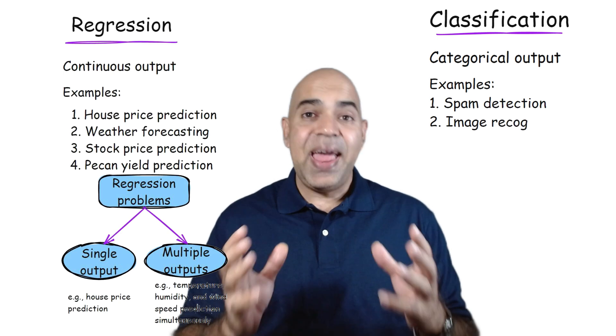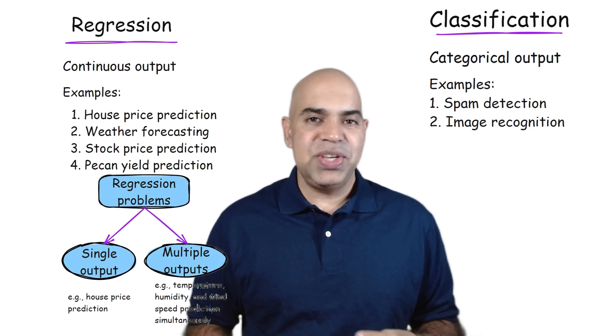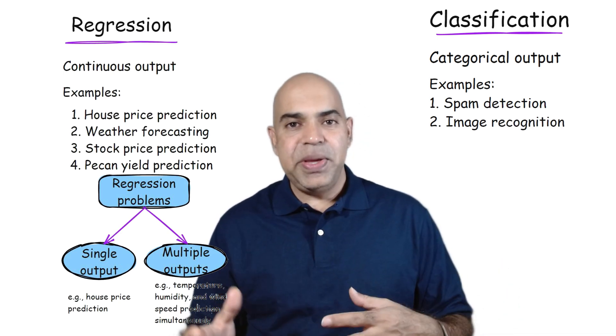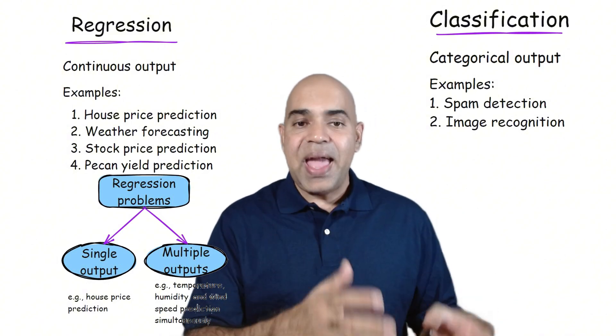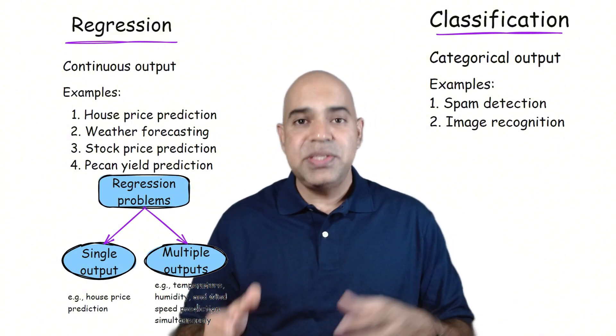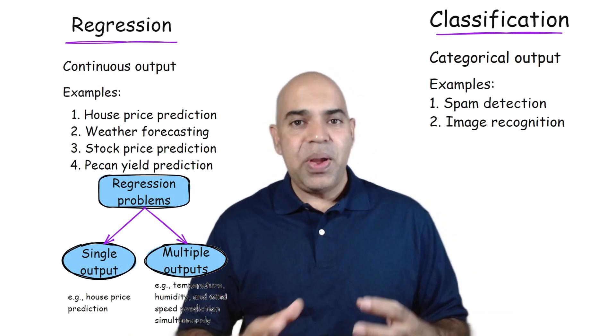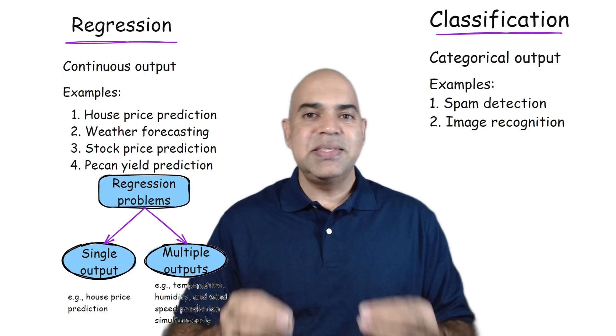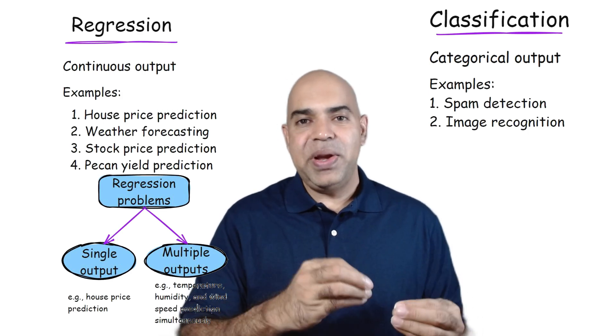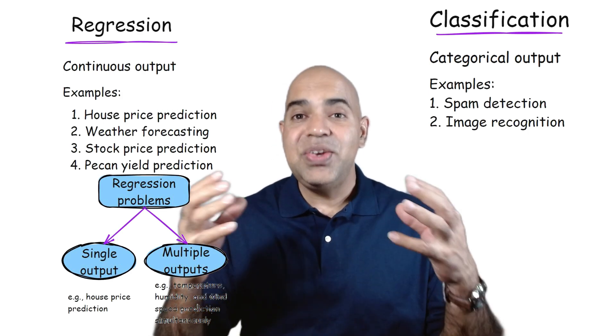Image recognition is another example of a classification problem. Classifying images into categories like cat, dog, or birds is known as a multi-class classification problem. A classification problem is called a multi-class classification problem when the prediction can result in more than two classes.